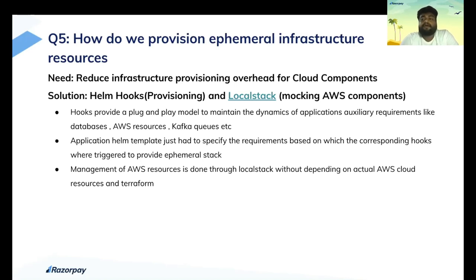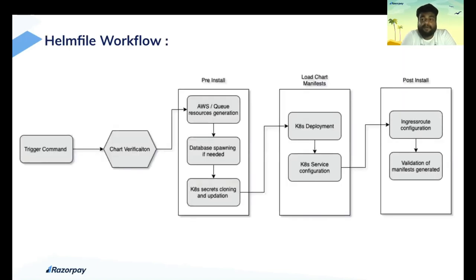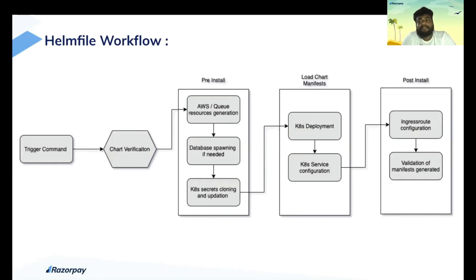To also avoid managing AWS resources via Terraform, we use LocalStack, which provides a framework for mocking AWS components. This is how a Helmfile workflow looks on running the command: the chart is verified, pre-install hooks run to bring up auxiliary requirements, Kubernetes resources are loaded and deployed into the cluster, and then post-install hooks run — such as ingress route configuration or manifest validation — making sure the ephemeral infrastructure per developer is available by just running one command. This is how we solve the problem of a streamlined workflow to bring up an ephemeral service fleet.